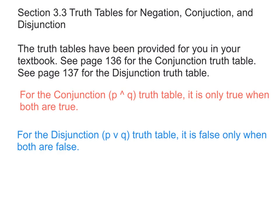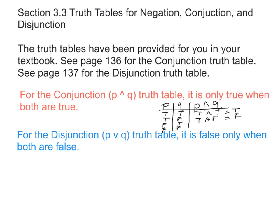So if you recall, you have P and you have Q. For P, you will have True, True, False, False. And for Q, you will have True, False, True, False. This is always the case. So True and True is True. Everything else is False for the conjunction. True and False is False. False and True is False. False and False is False.